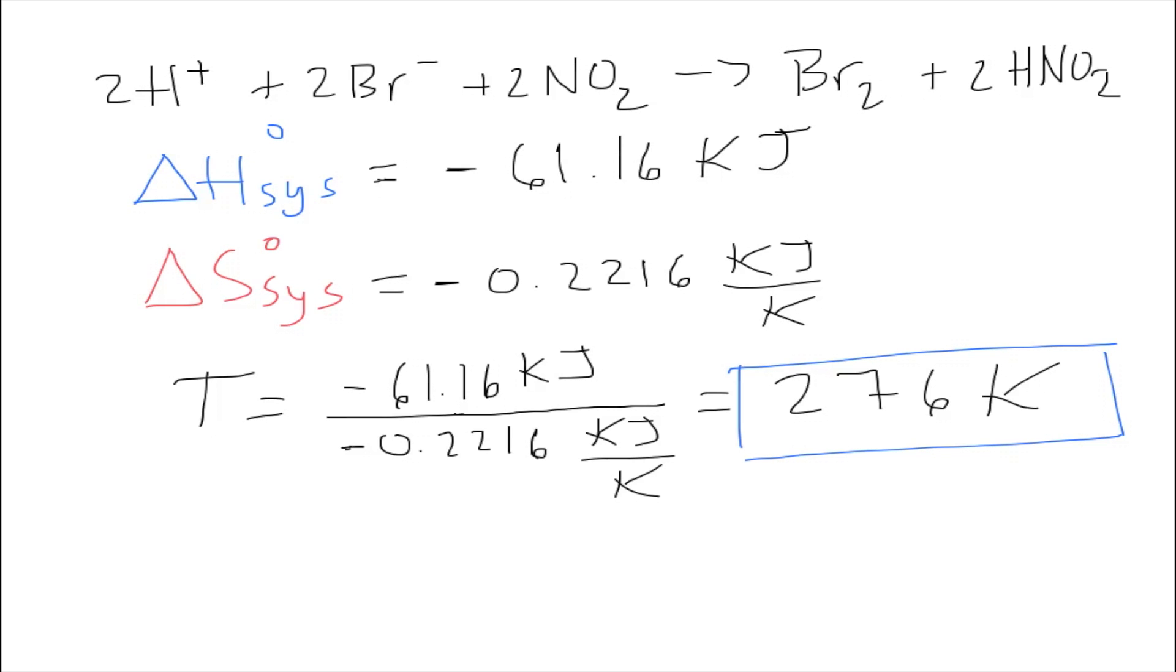Right now, they both have negative signs, so this is temperature dependent and we need to find out when it's spontaneous. An easy way to find this out is because we know the boundary, we can just change that number and see what we get for delta G. Let's use 300 kelvin, which is above 276. If we get a positive delta G, our reaction is non-spontaneous. If we get a negative delta G, our reaction is spontaneous above 276.